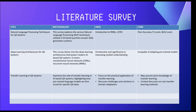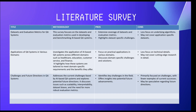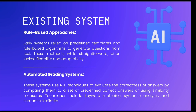For the literature survey, we have presented around 6 literature surveys with overall pros and cons of the project. These are the existing systems which come under this project domain. The existing system involves two main approaches: one is the rule-based approach, and another one is the automatic grading system.